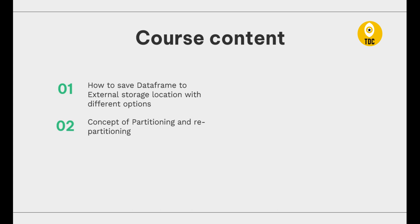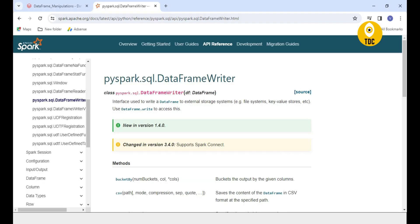In this video we will be discussing how to save data in a DataFrame to external storage locations, with the different options available when doing the save or write operation to an external storage location. We will also learn the concept of partitioning and repartitioning, how it can be useful in real-time scenarios. Before jumping to practicals, we will understand what Spark documentation says about DataFrame Writer, to get some theoretical understanding as well.